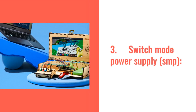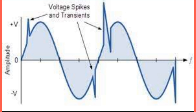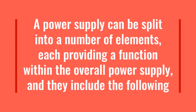3. Switch mode power supply (SMPS). In this form of power supply, electronic circuits use switching technology to regulate the output. Although spikes are present on the output, they offer very high levels of efficiency and in view of this they can be contained in much smaller packages than their linear equivalents. A power supply can be split into a number of elements, each providing a function within the overall power supply.